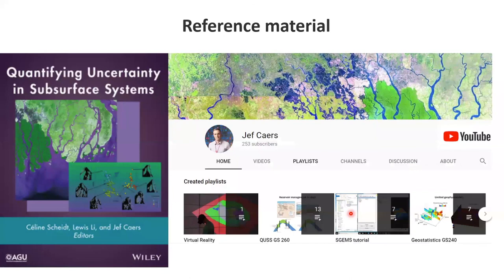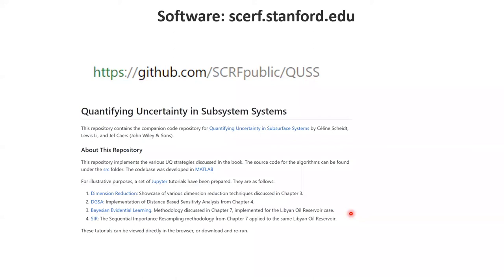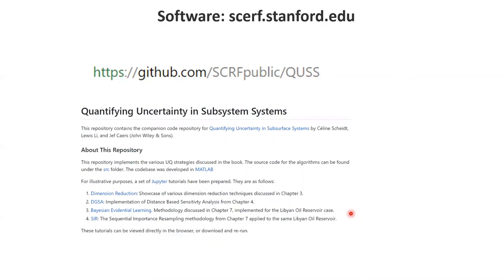There is extensive reference material: a book published by Wiley last year, a YouTube channel searchable by name with presentations covering details of the book and other material, and a website with a Git repository containing code for global sensitivity analysis, falsification, dimension reduction, and direct forecasting. That concludes the presentation on Bayesian Evidential Learning.